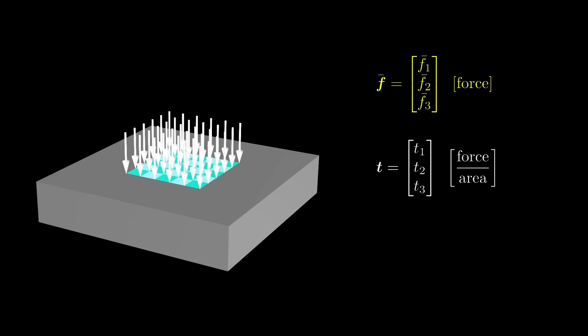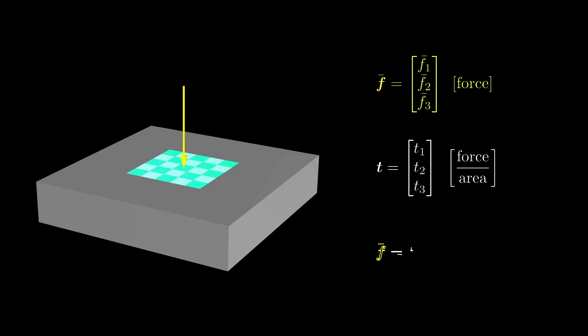If the traction is constant over the area A, then the total force acting on that area is simply T times A. However, in continuum mechanics we are not just interested in tractions that act evenly distributed over perfectly flat surfaces — instead we are interested in all the tractions acting inside objects, and this is exactly what we need the stress tensor for.